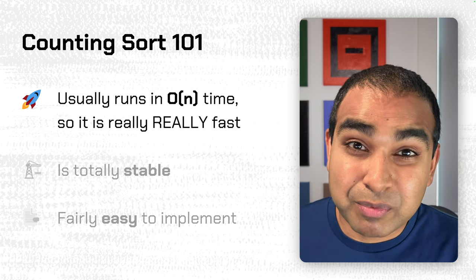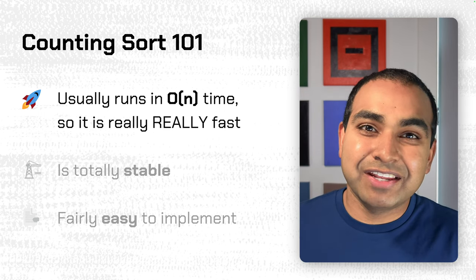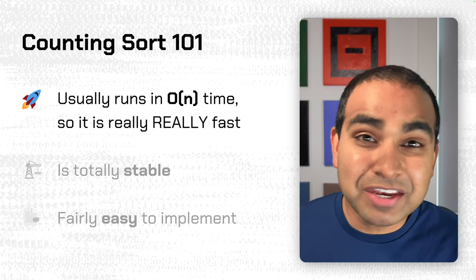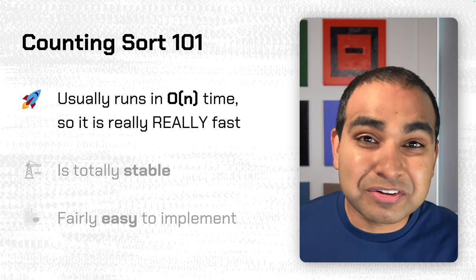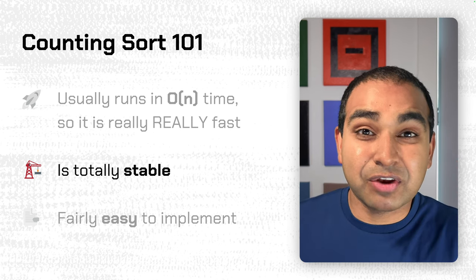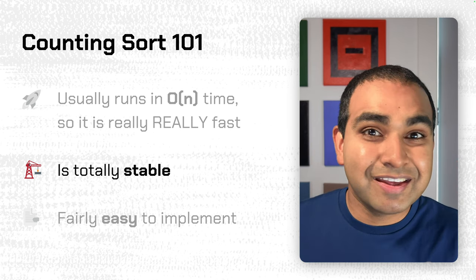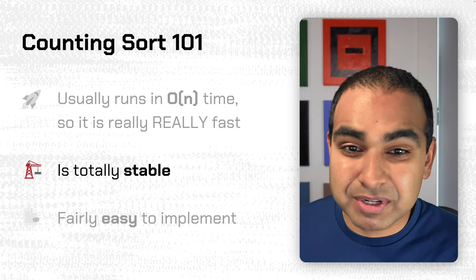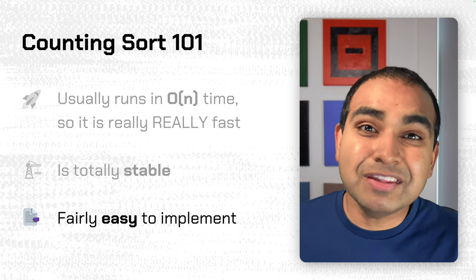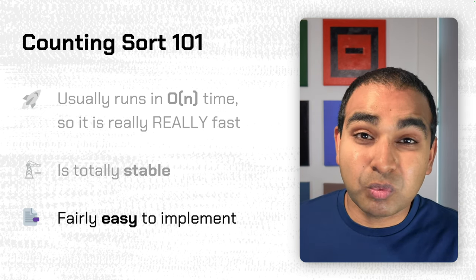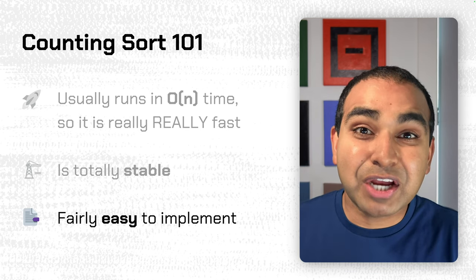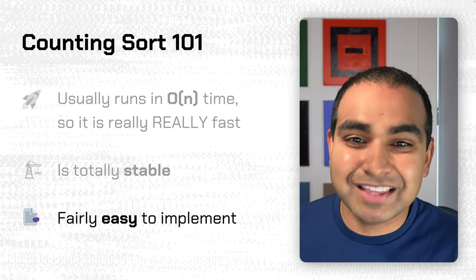One of the more interesting sorting algorithms is counting sort. There are a few things that make it quite impressive. First, it is really, really fast — it runs in linear time, which is a stark departure from other sorting algorithms we've looked at so far. It is stable, meaning the relative order of items in the unsorted version is maintained after everything has been sorted. And it's fairly easy to implement.